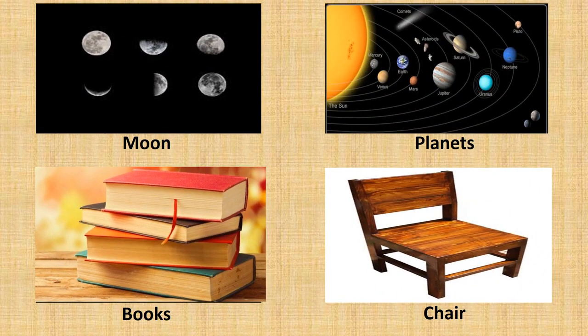Here the examples of non-luminous objects are shown to us: moon, planets, books, and chair. If you look carefully, some of these objects are naturally occurring and some are man-made.